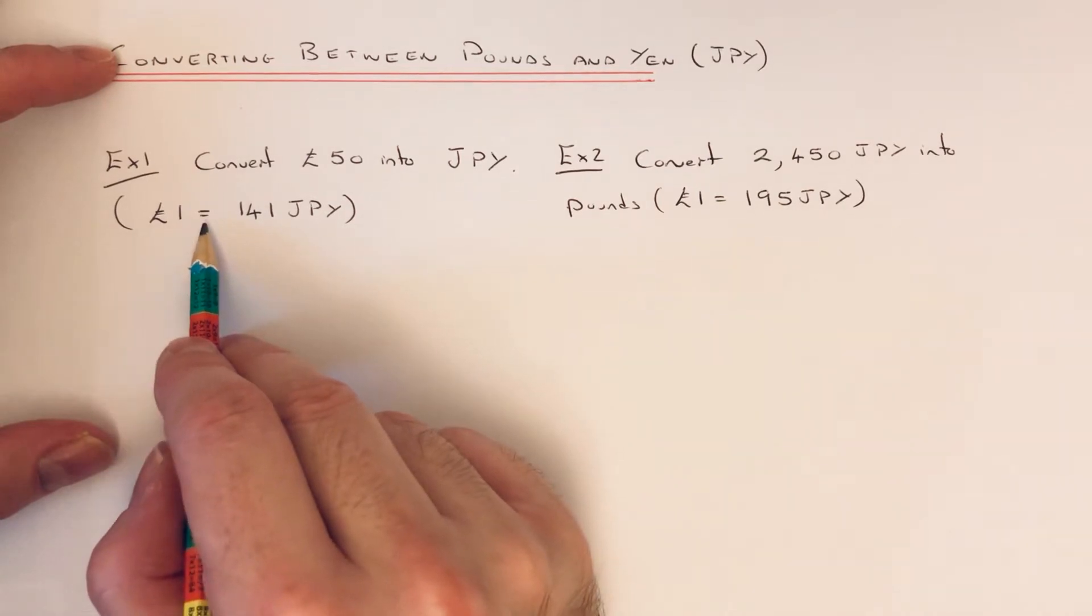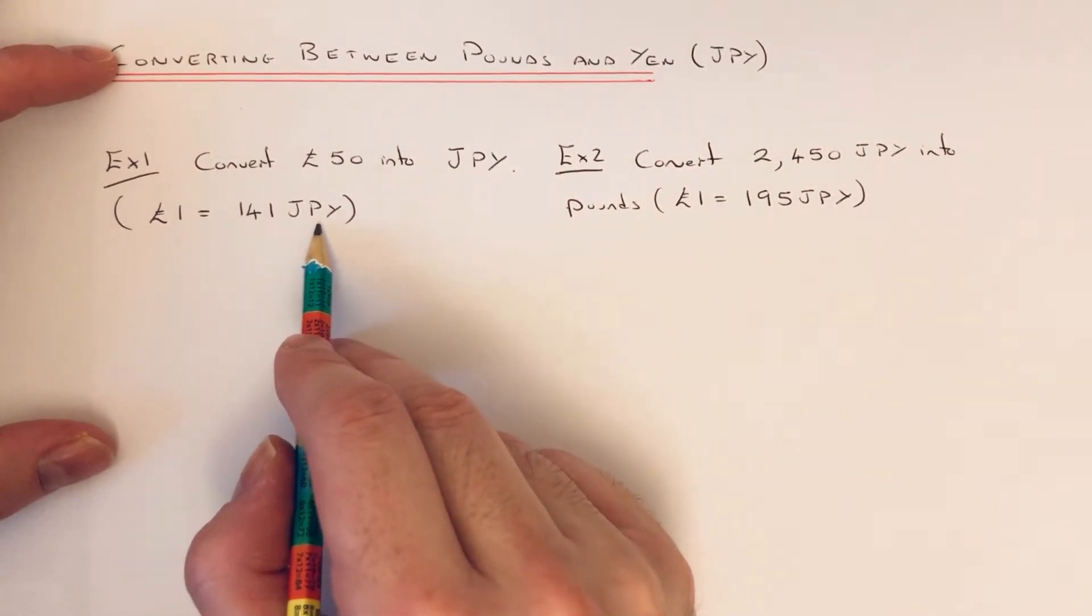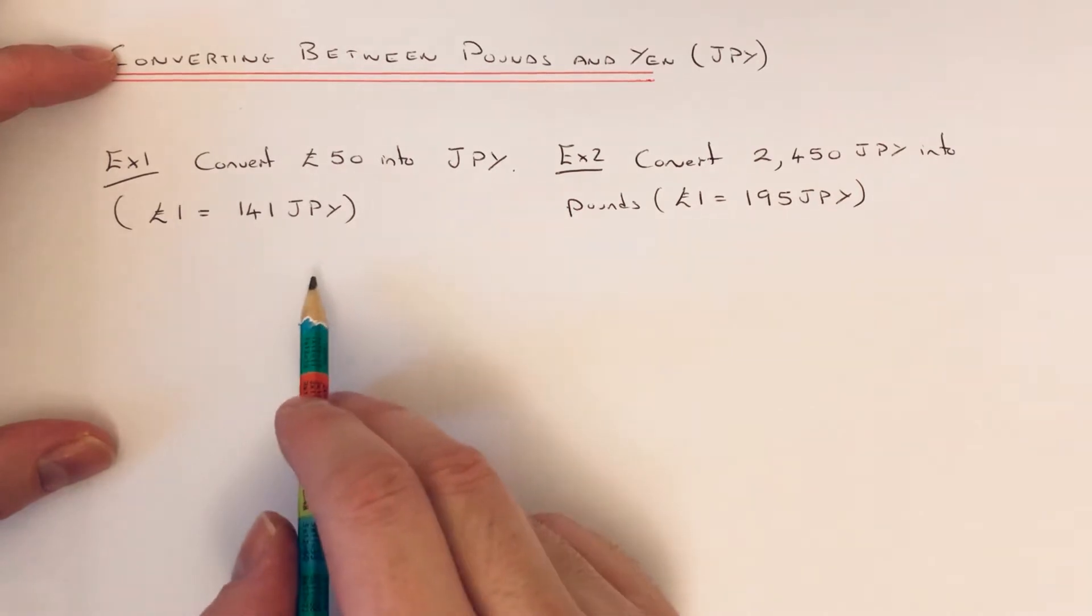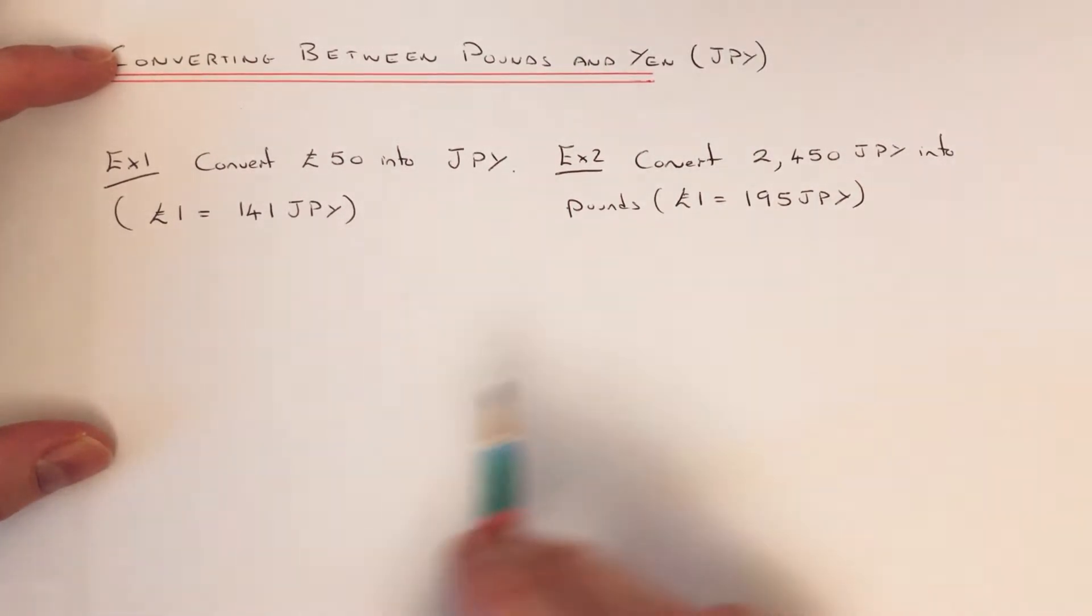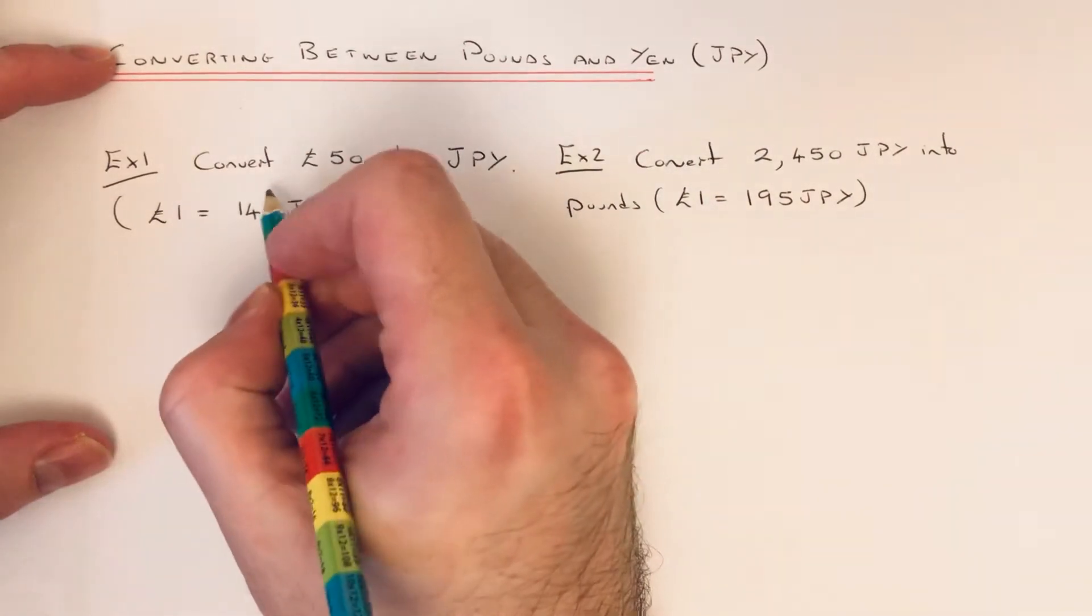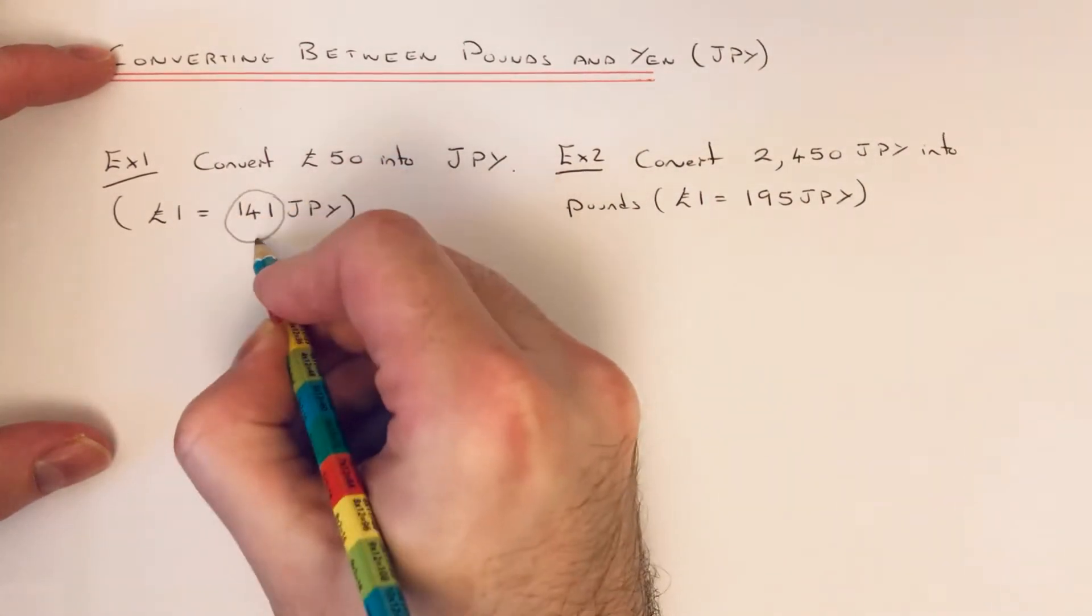Now when you convert pounds into a foreign currency, you multiply by the exchange rate number, which is this number here.